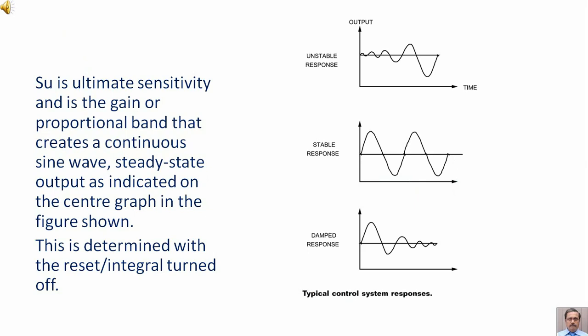S subscript U is ultimate sensitivity and is the gain or proportional band that creates a continuous sine wave steady-state output as indicated on the center graph in the figure shown. This is determined with the reset (integral) turned off.